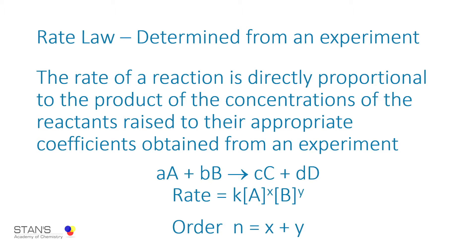The rate law is always determined from an experiment — it is experimental evidence. The rate of a reaction is directly proportional to the product of the concentrations of the reactants raised to appropriate exponents, which are obtained from an experiment. For the reaction A and B giving C and D, when you write the rate law, rate equals k times concentration of A raised to x, times concentration of B raised to y. The values of x and y have to be determined from an experiment, so the order n equals x plus y. That's the difference between the law of mass action and the rate law.